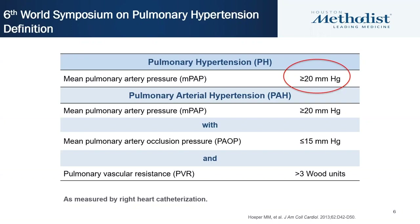When we talk about pulmonary hypertension we look at mean PA pressure, but pulmonary arterial hypertension is specifically defined as mean PA pressure ≥20 with a wedge pressure less than 15 and a PVR greater than 3 Woods units. PVR is calculated as mean PA pressure minus wedge pressure divided by cardiac output. Thermodilution is preferred. To diagnose PAH, you definitely need a right heart catheterization — you cannot make the diagnosis based off echo alone.